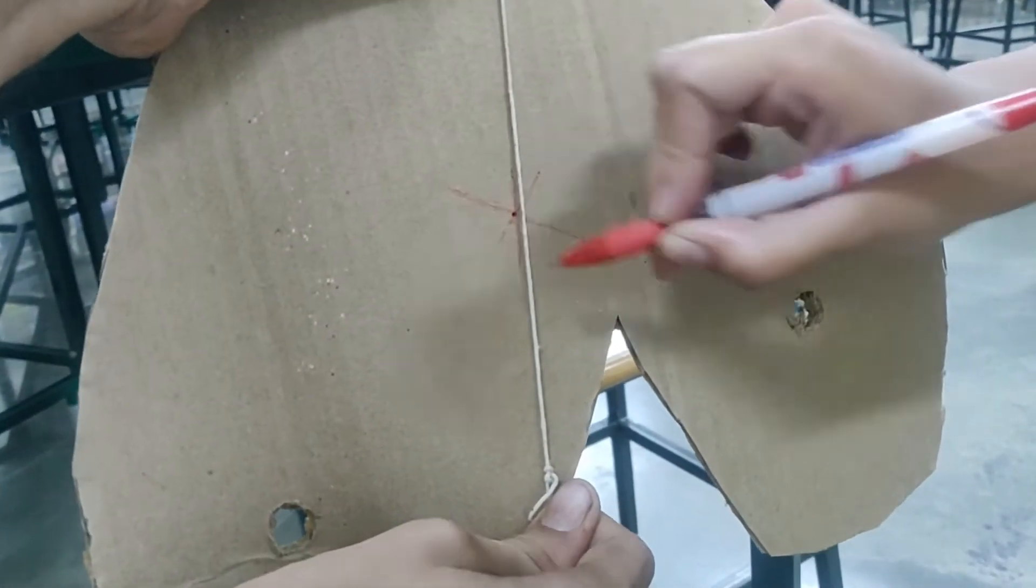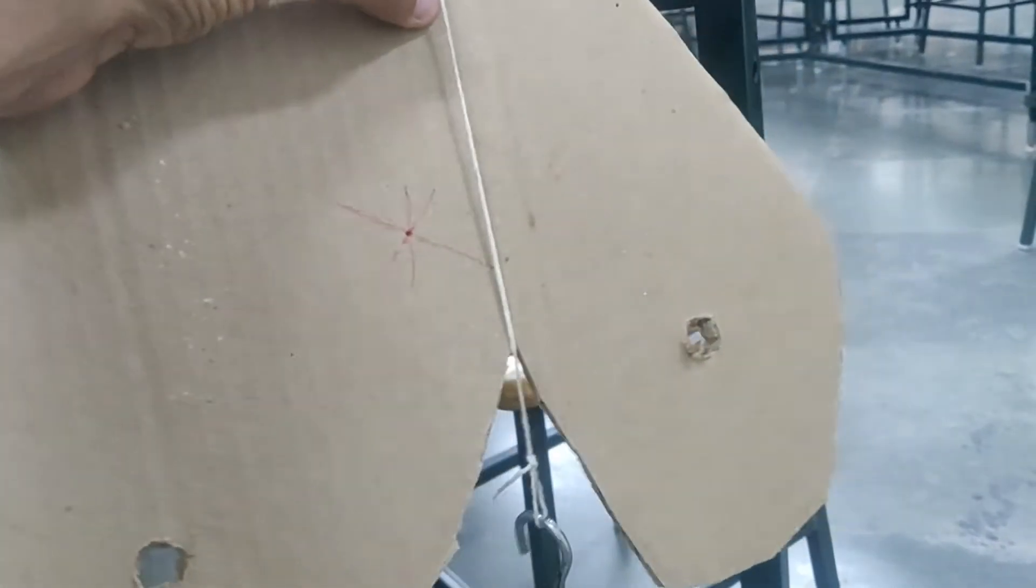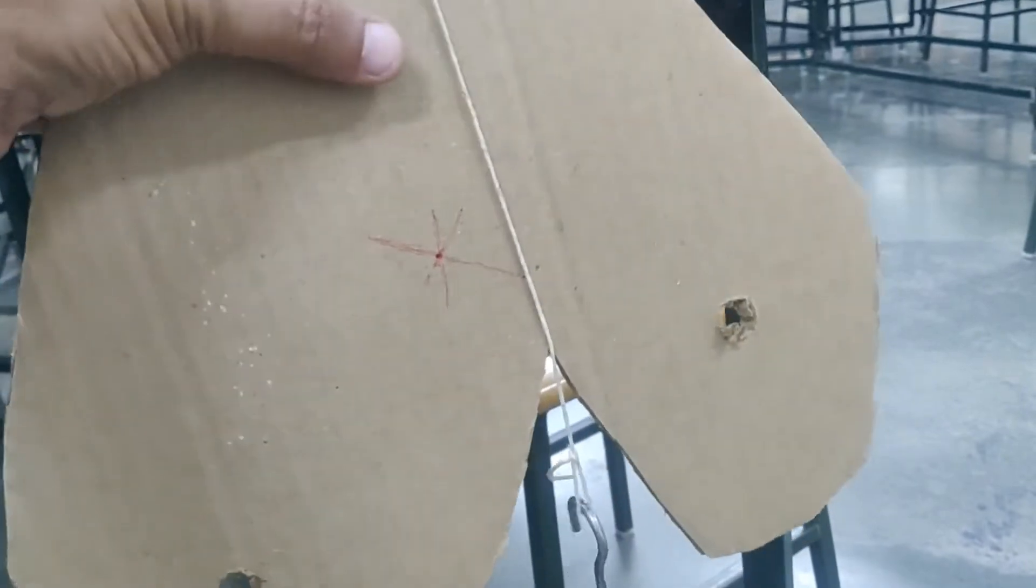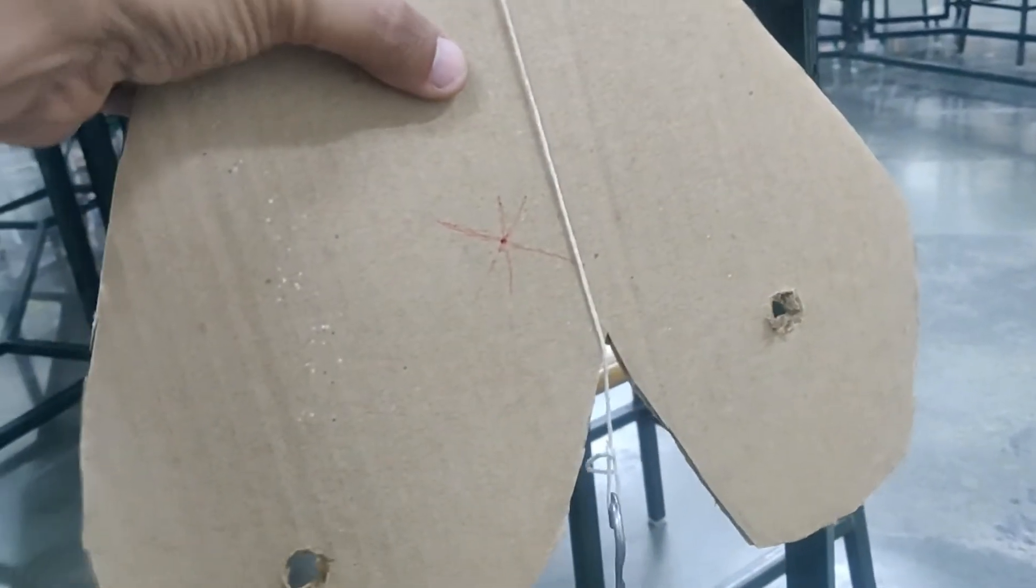All right. Now the meeting point of all these three lines that we got is actually our center of gravity. Now let's try to balance this board against this point.